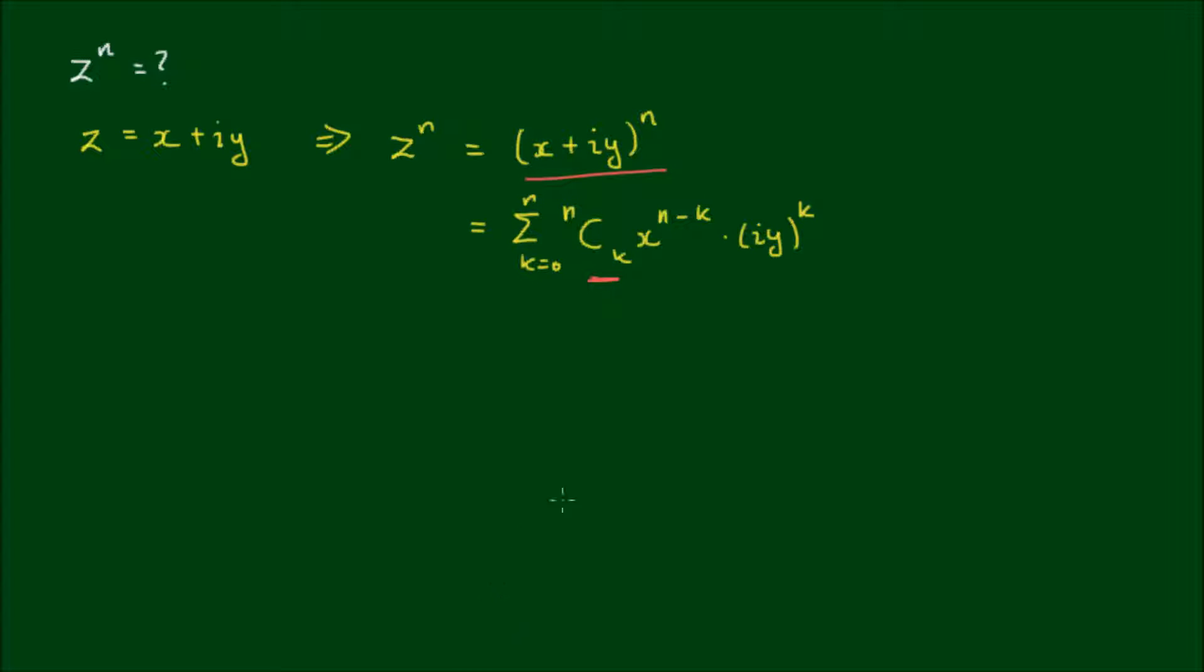And now this n choose k factor here is the binomial coefficient for the kth term. And if I was to write this expression in expanded form, I would get x to the power of n as the first term plus nc1 x to the power of n minus 1 by iy plus nc2 times x to the power of n minus 2 by iy squared.